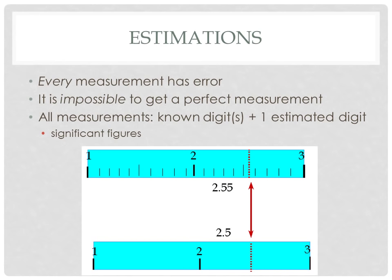Now if we're measuring the same object with this measuring device at the top, we're going to get a different measurement because it's marked differently. The smallest graduations are not marked every whole centimeter — it's actually marked every tenth of a centimeter. So we have two, two point one, two point two, two point three, et cetera. We can see clearly that it is between two point five and two point six, so we know for sure the length is two point five something. The two point five are known digits. We're then estimating the next decimal place, and we estimate it's halfway between, so we say two point five five.